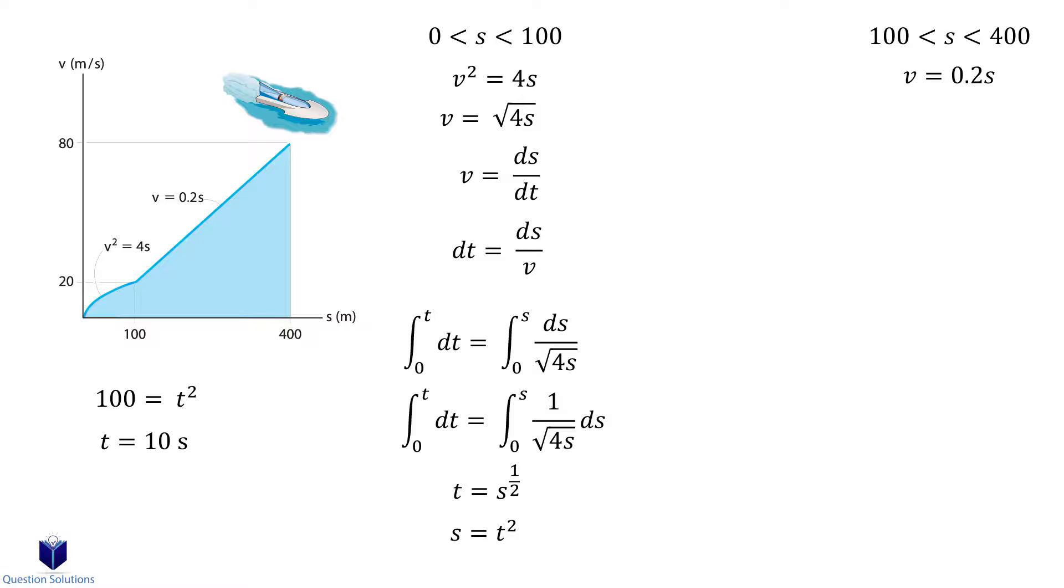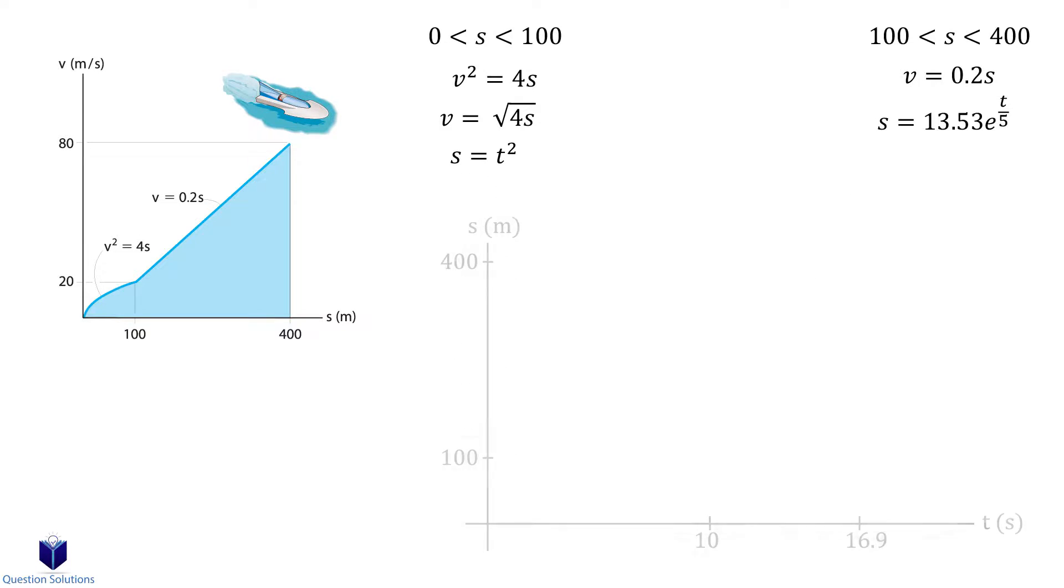Using those as our lower bounds for the next integral we can once again solve for t. As before we need to isolate for the displacement. The question asks us to determine the time it took for it to travel 400 meters. So let's substitute that in which gives us 16.9 seconds. The graph looks like this.